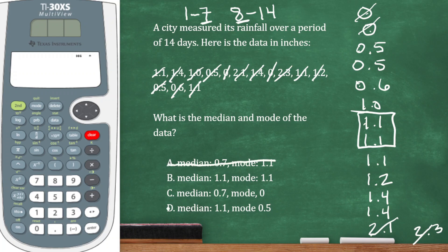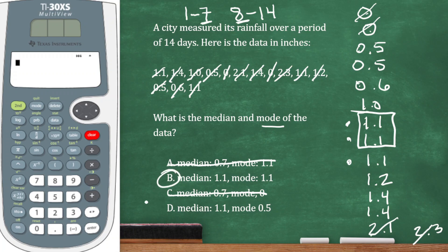So I know it's not A and it's not C, but it could be B or D. Let's look at the mode. The mode is the number that occurs most frequently, and 1.1 appears three times. So my median and mode are both 1.1.